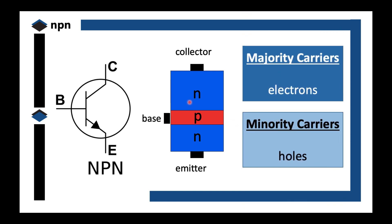So because you have two N-type materials, your majority carriers are electrons. Because N-type material's majority carriers are electrons. And for NPN, because there's one P-type, the minority carriers are holes. It makes sense, right?